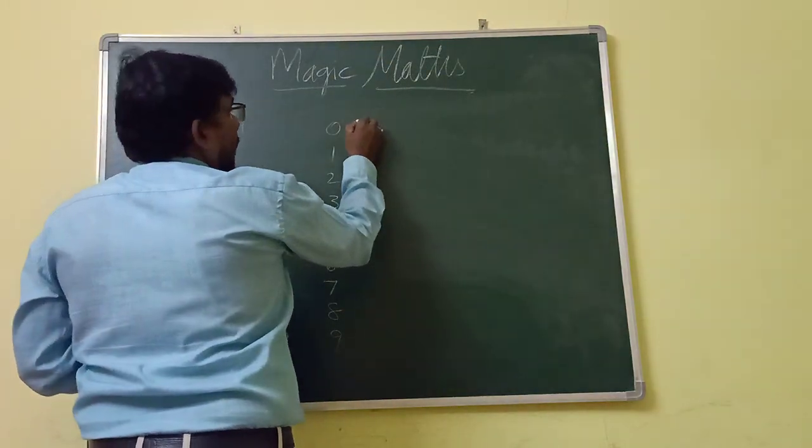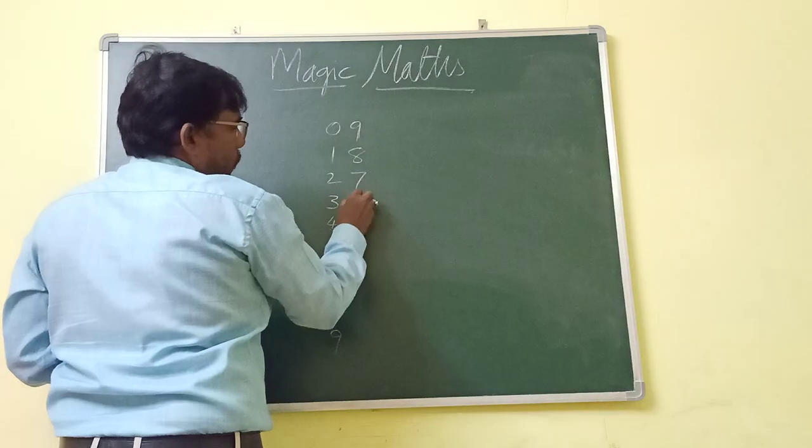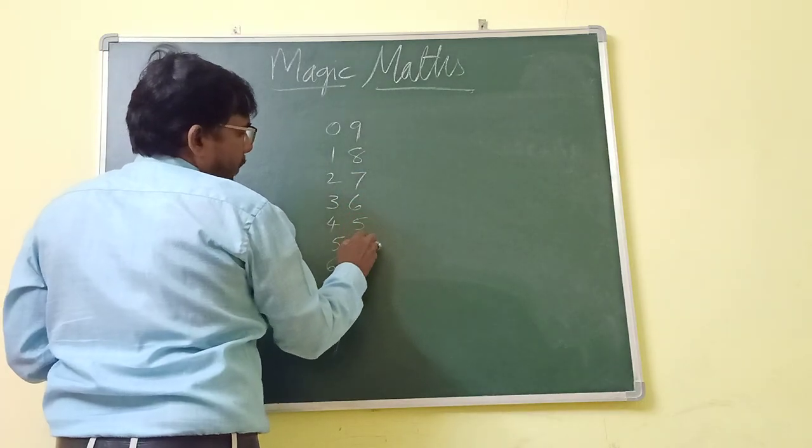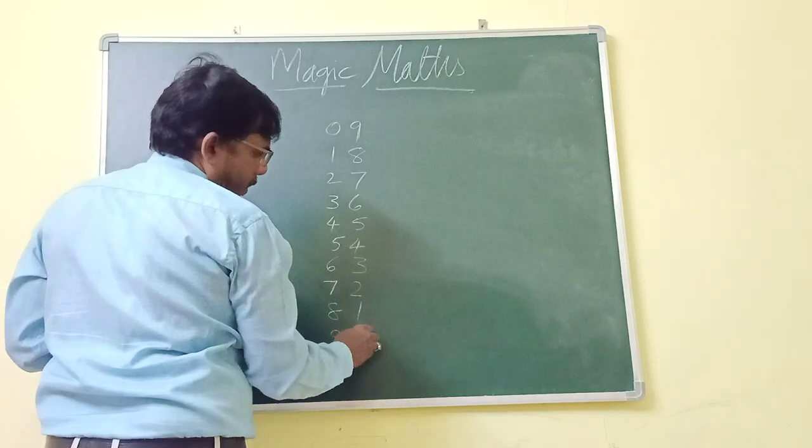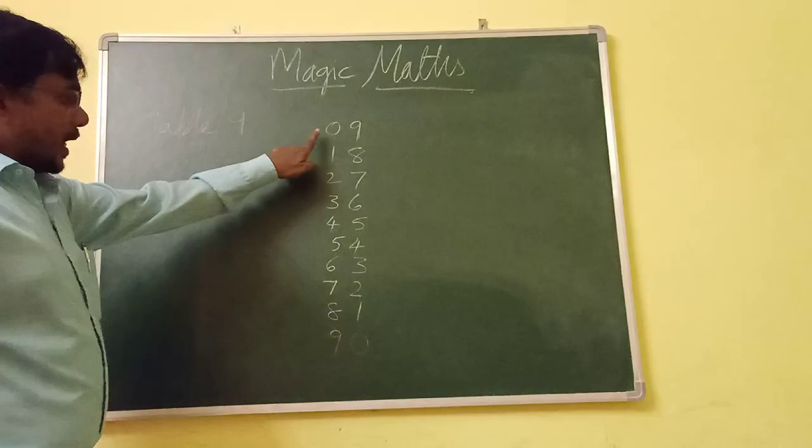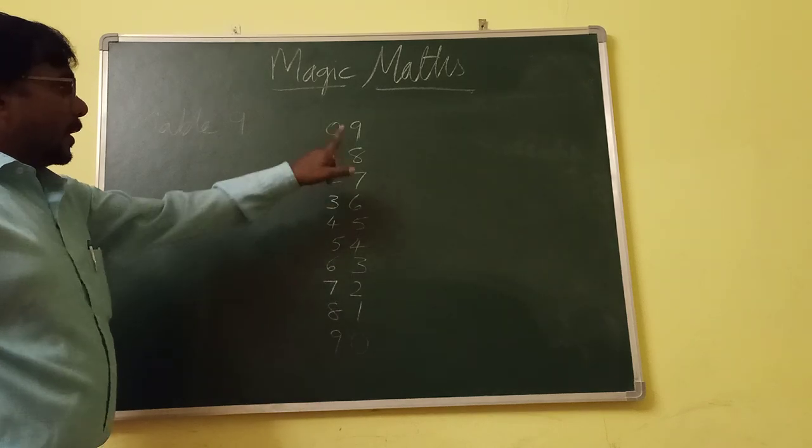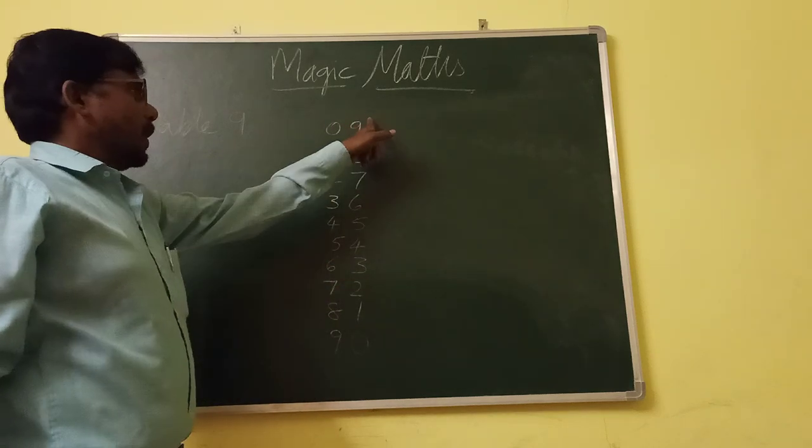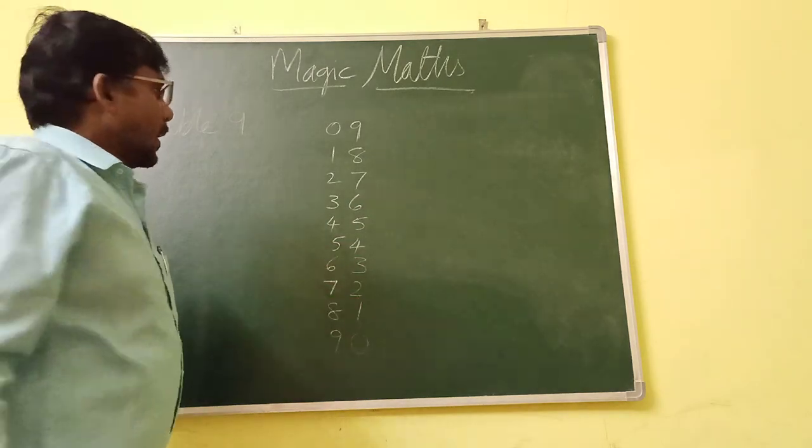Now, rest problem, 9, 8, 7, 6, 5, 4, 3, 2, 1 and 0. See, first we start from 0, 1, 2, 3, 4, 5, 6, 7, 8, 9. And start from the opposite, rest problem, 9, 8, 7, 6, 5, 4, 3, 2, 1, 0.